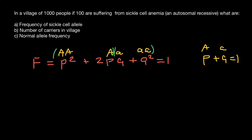These two alleles can produce different combinations, so we have three genotypes. We have an absolute number of 1,000 people in the village, and 100 of them are suffering from this genetic disorder. That means they belong to the homozygous recessive genotype. So 100 people belong to that genotype, and the other 900 people together make 1,000.